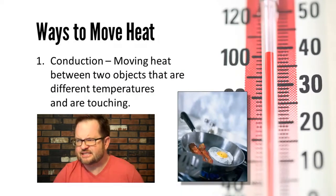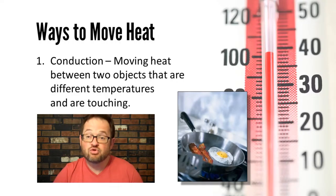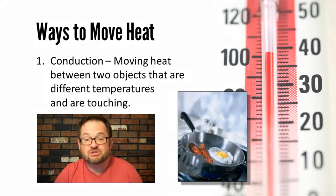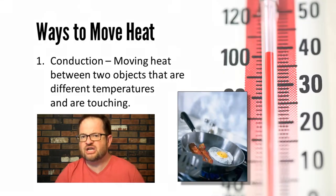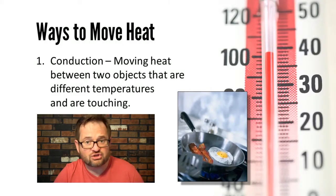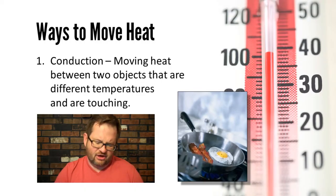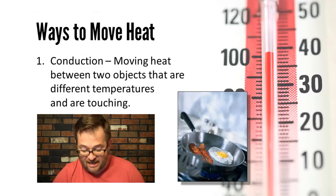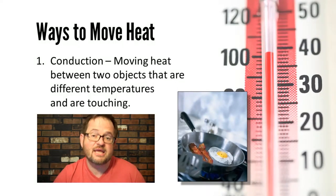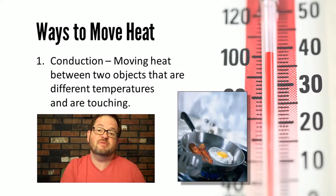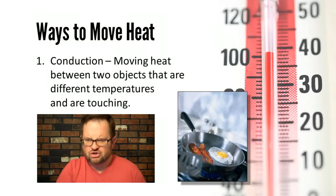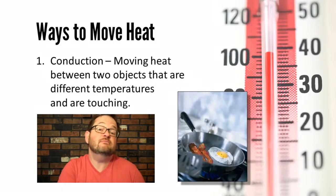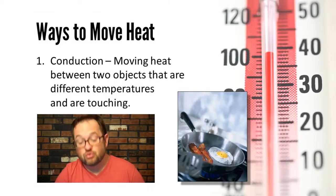Conduction is, in many ways, the easiest way to picture how heat moves. Conduction is moving heat between two objects that are different temperatures and are touching. The idea that things are touching is incredibly important to the idea of conduction. For example, the pan is hot, we put the cold egg onto the pan, and heat transfers from the pan into the egg by conduction — two objects are touching and they are different temperatures, so heat moves from the hotter object into the cooler object.